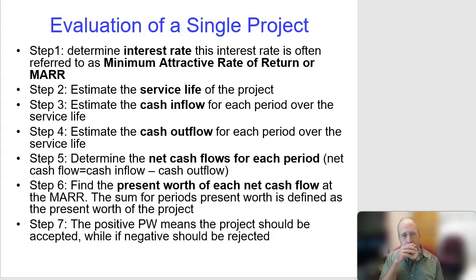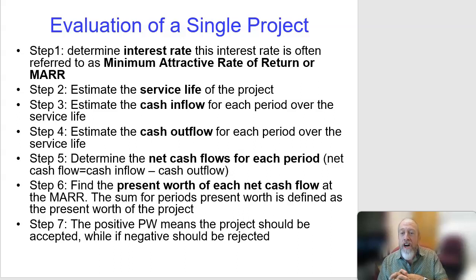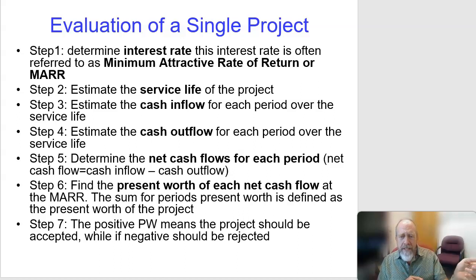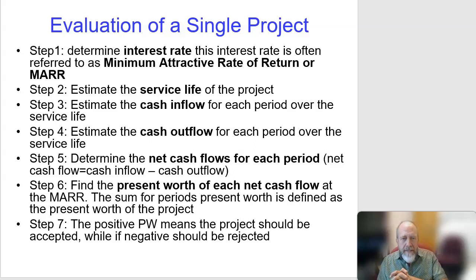When you're looking at a project, we're going to look at an interest rate called the MARR — Minimum Attractive Rate of Return. Basically, that's the interest rate that says below this we really don't want to do this; above this, looking pretty good. We want to know what that number is, and we'll talk about how to get to that number.